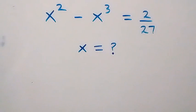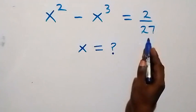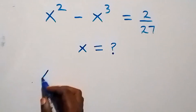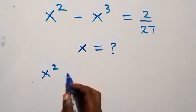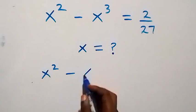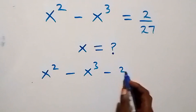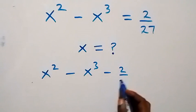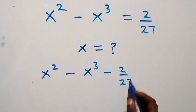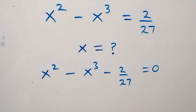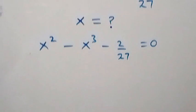Hello, you are welcome. How to solve this nice algebra equation. From here, let's take 2 over 27 to this side, and we have x squared minus x cubed minus 2 over 27 equals zero.